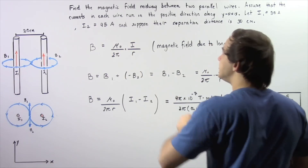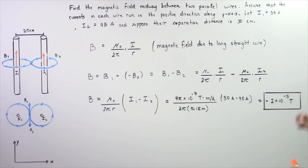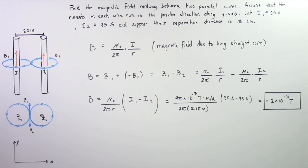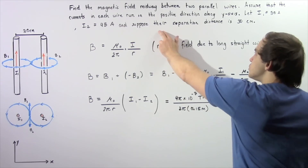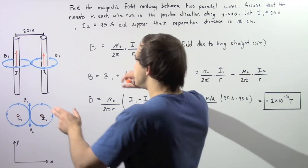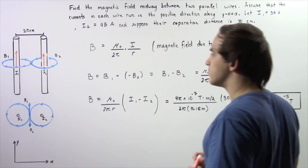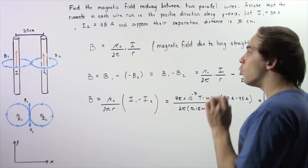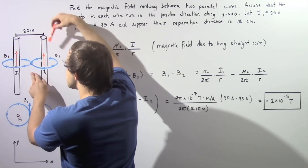We want to find the magnetic field midway between the two parallel wires. Assume the currents in each wire run in the positive y-axis direction. Let current I1 be 30 amps, current I2 be 45 amps, and suppose the separation distance between the two parallel wires is 30 centimeters. We want to find the magnetic field midway between the two wires.